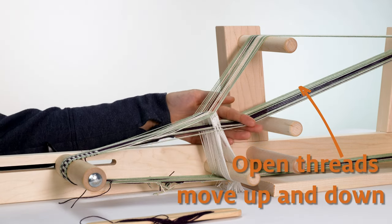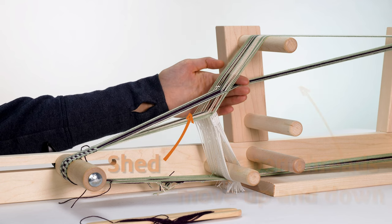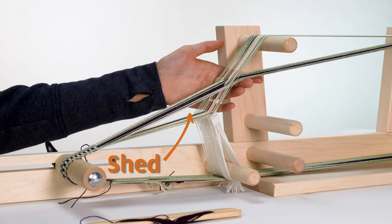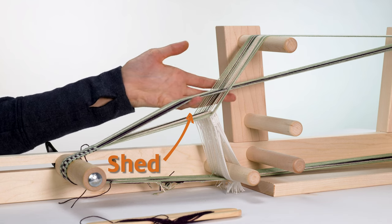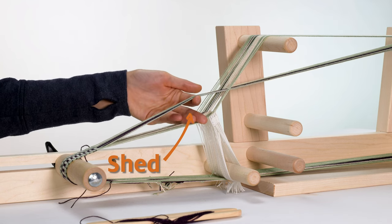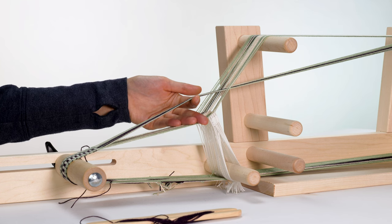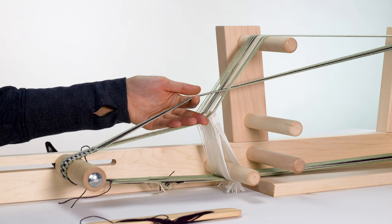Open threads, on the other hand, move up and down to create what we call a shed. When the open threads are pushed up, we create a shed, which is a space between the two groups of warp threads. This shed allows us to place our weft thread through and in turn create our fabric.